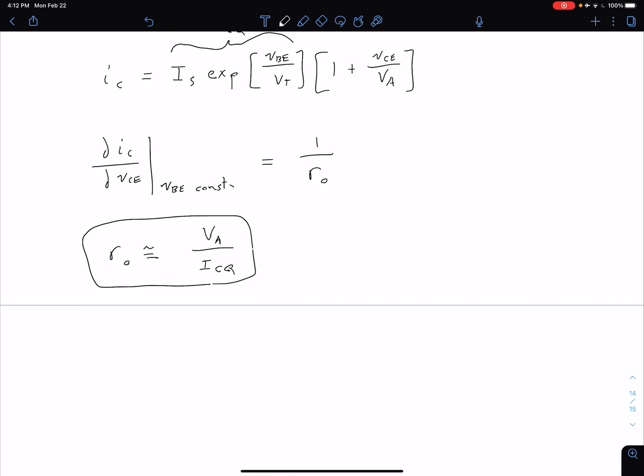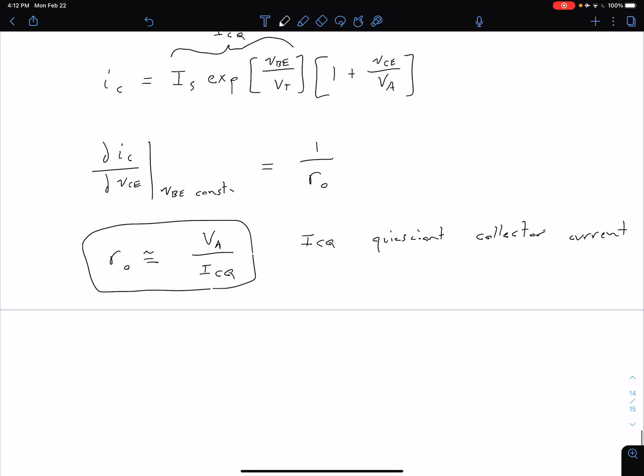And again our ICQ we'll deal with this a little bit later on but this is something called our quiescent collector current. We can think about that as our standard value of our collector current prior to considering that early voltage.